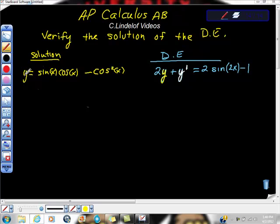I already have y as this, and this y is this one. What I need to do is find the first derivative of this, which would be y prime. And then put it here and see if all of this, when I put it together, equals that side.